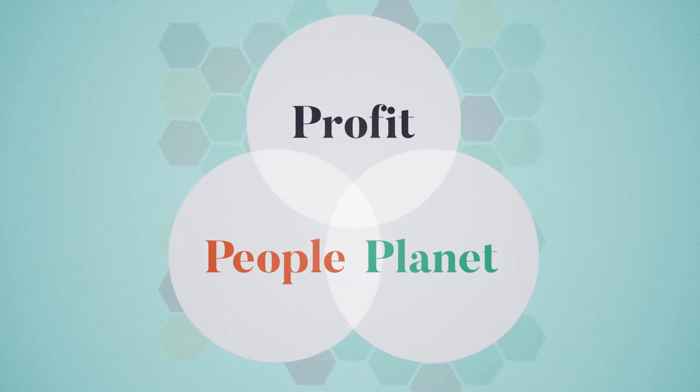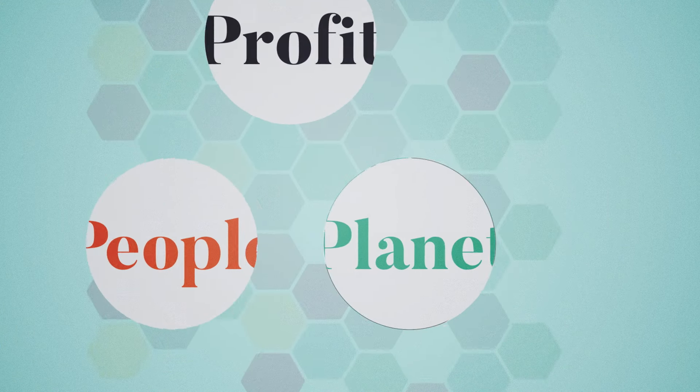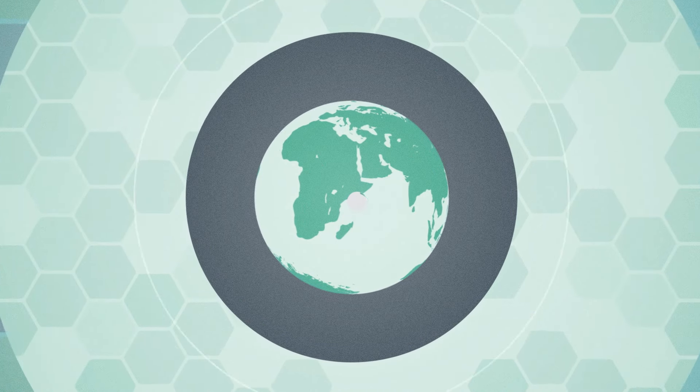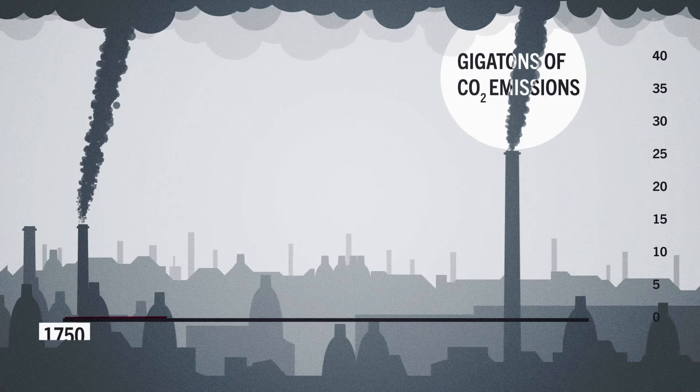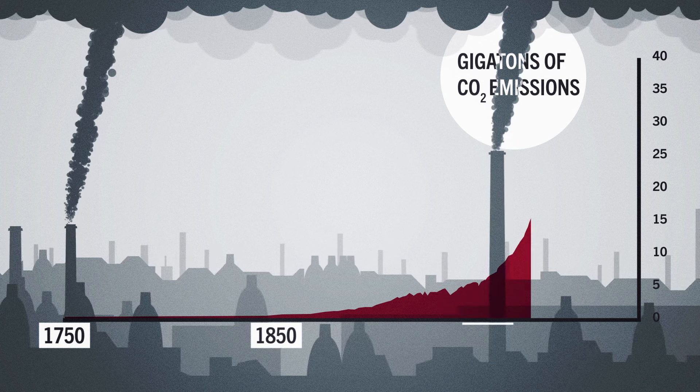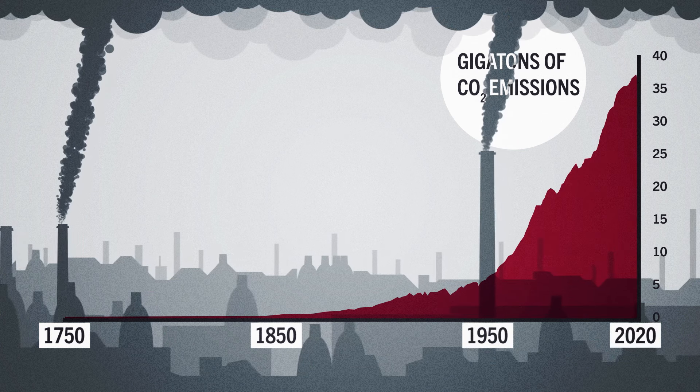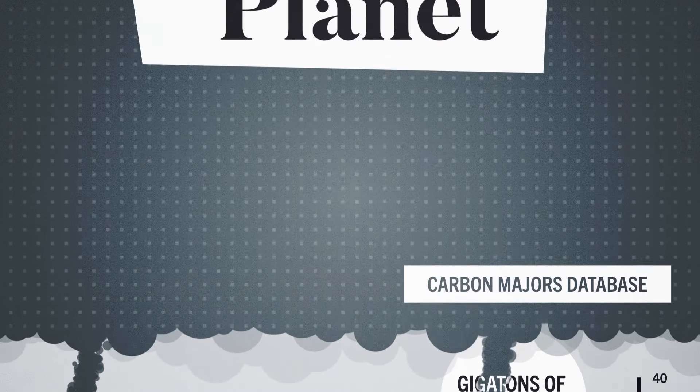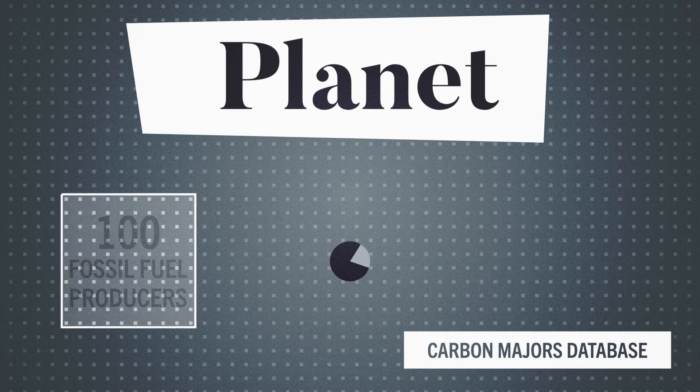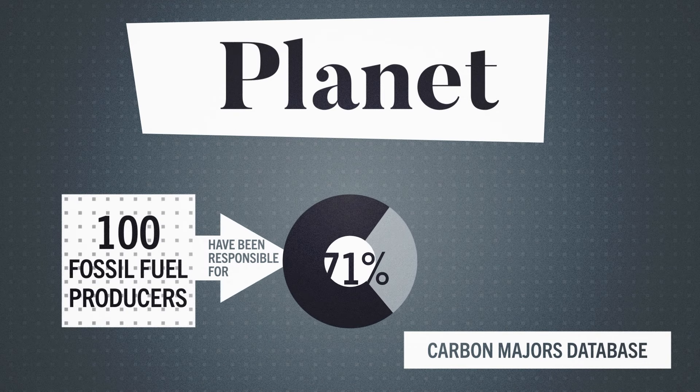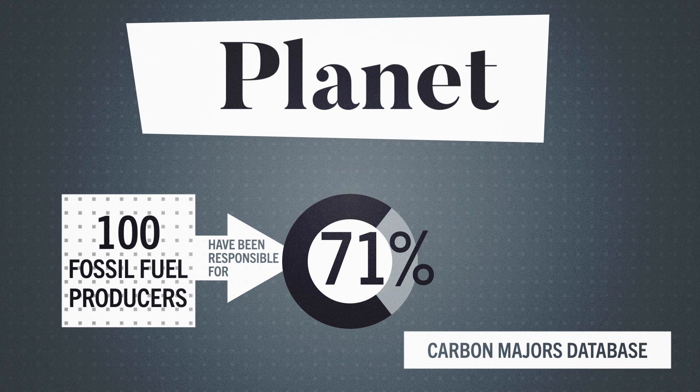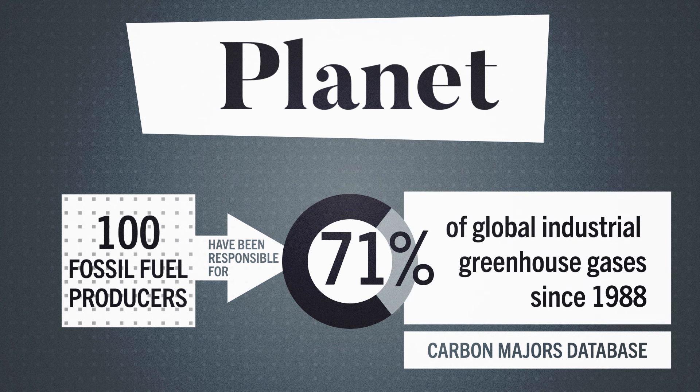The triple bottom line's third and final component revolves around positively impacting the planet. Since the industrial revolution, large corporations have contributed a staggering amount of environmental pollution. A report by the Carbon Majors database found that a hundred fossil fuel producers have been responsible for 71 percent of global industrial greenhouse gases since 1988.